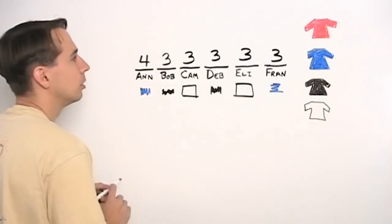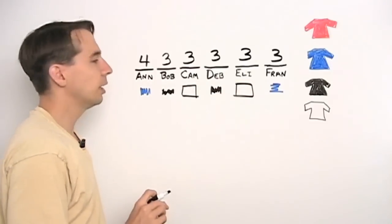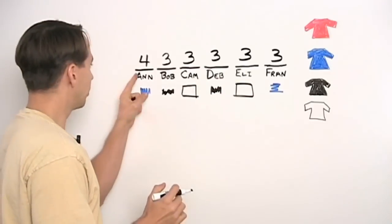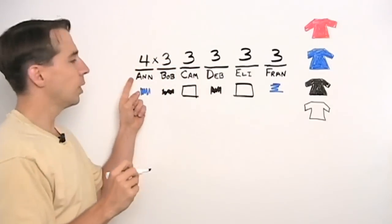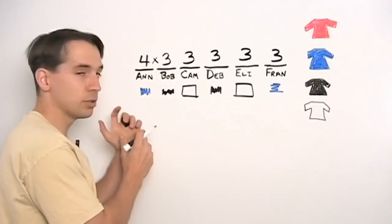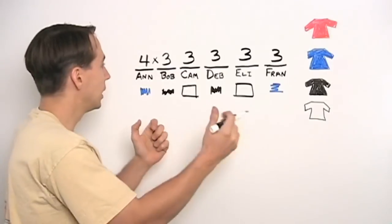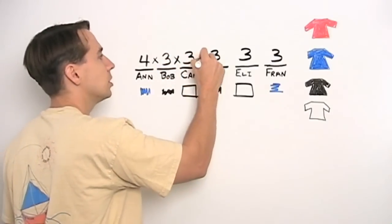And as you can see, now we can count how many ways they can choose their shirts. For each of Ann's four choices, Bob has three. So there are 4×3 ways Ann and Bob can choose. For each of these 4×3 ways that Ann and Bob choose, Cam has three choices as well. It's 4×3×3. And we just continue.